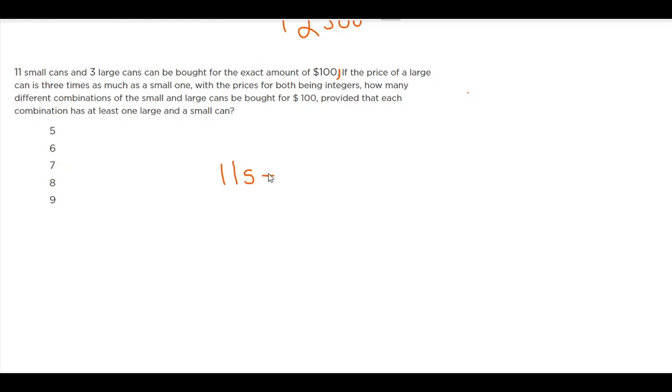So we have 11s + 3L = 100, where s is basically the dollar value of small cans and L is basically the dollar value of one large can.